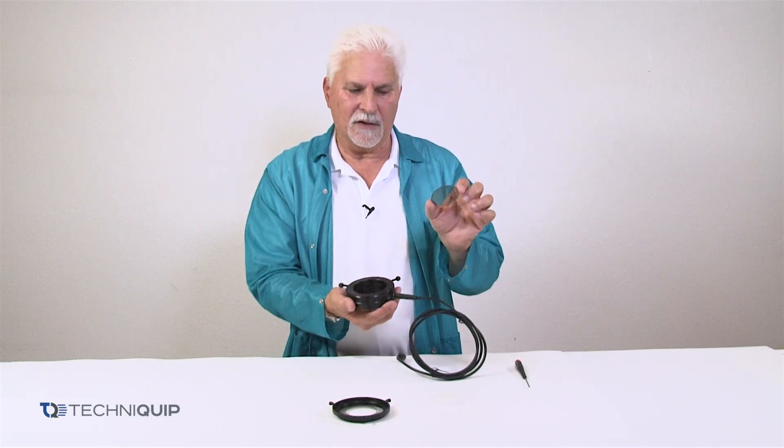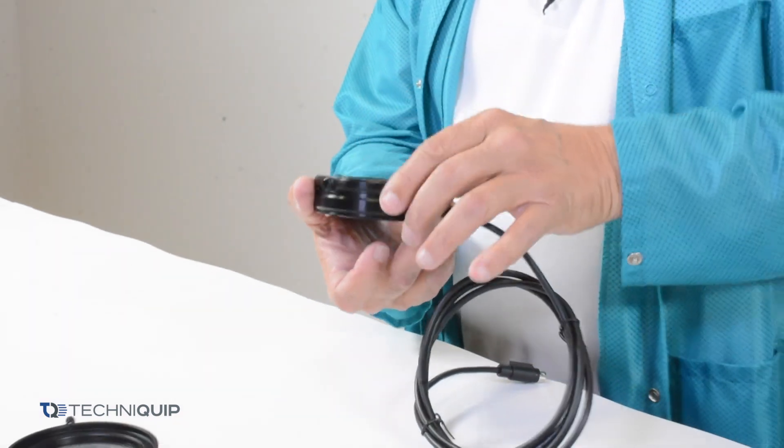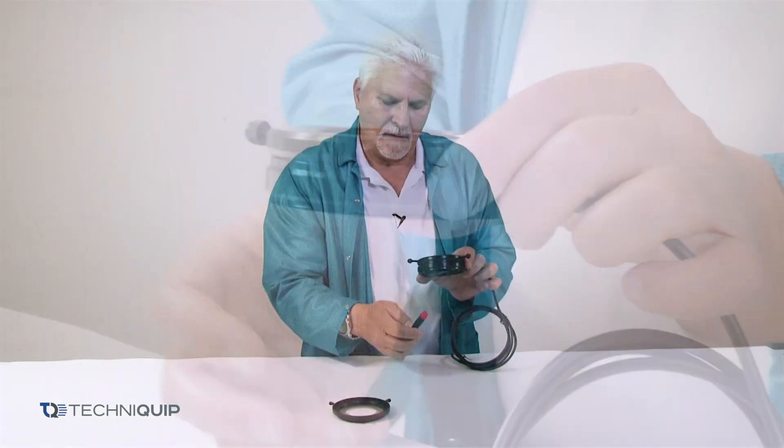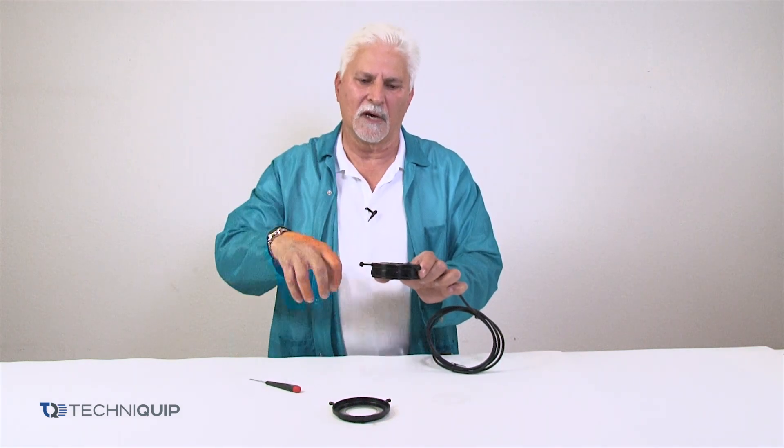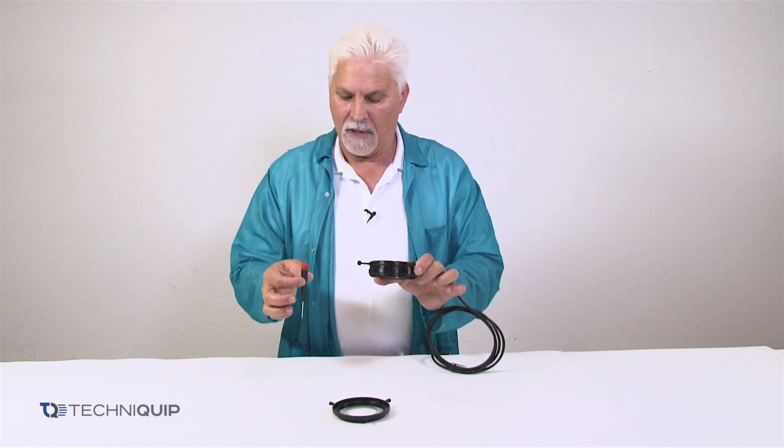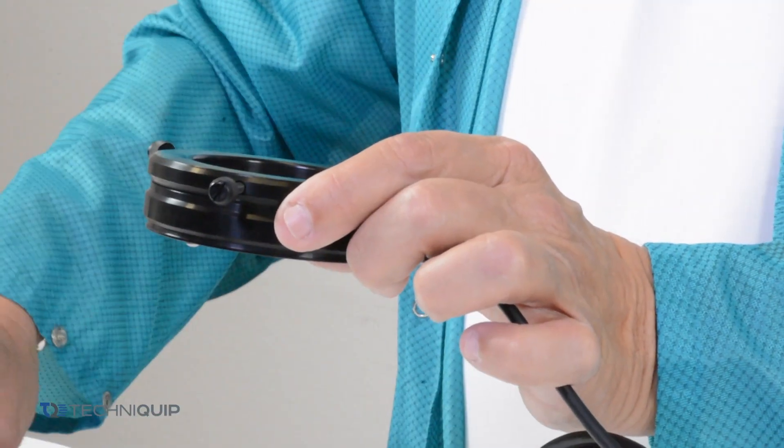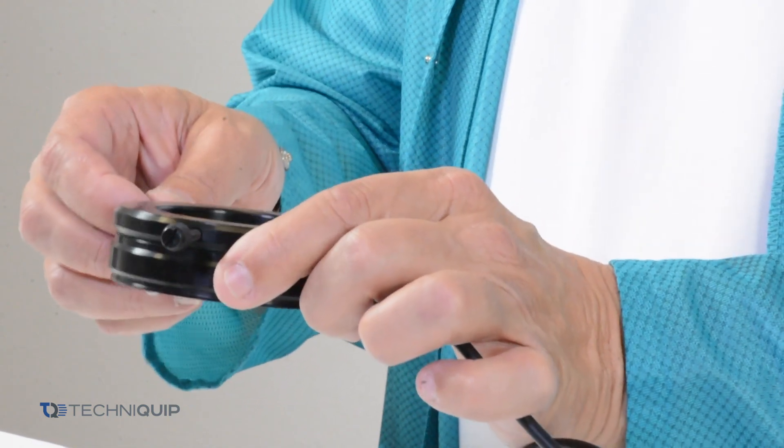The next step is to take that lens and insert it into the body. It'll sit into the bottom very flush once you get it in right. Again, don't use your fingers. Maybe a little plastic item might be useful just to tap it into place. Once it's in, you'll know it's seated in.